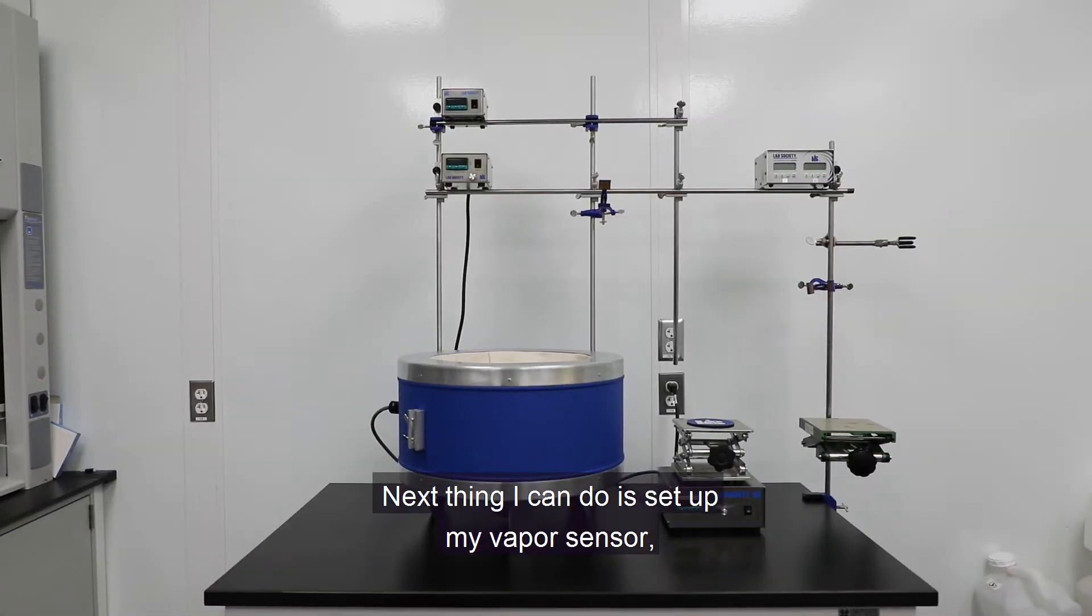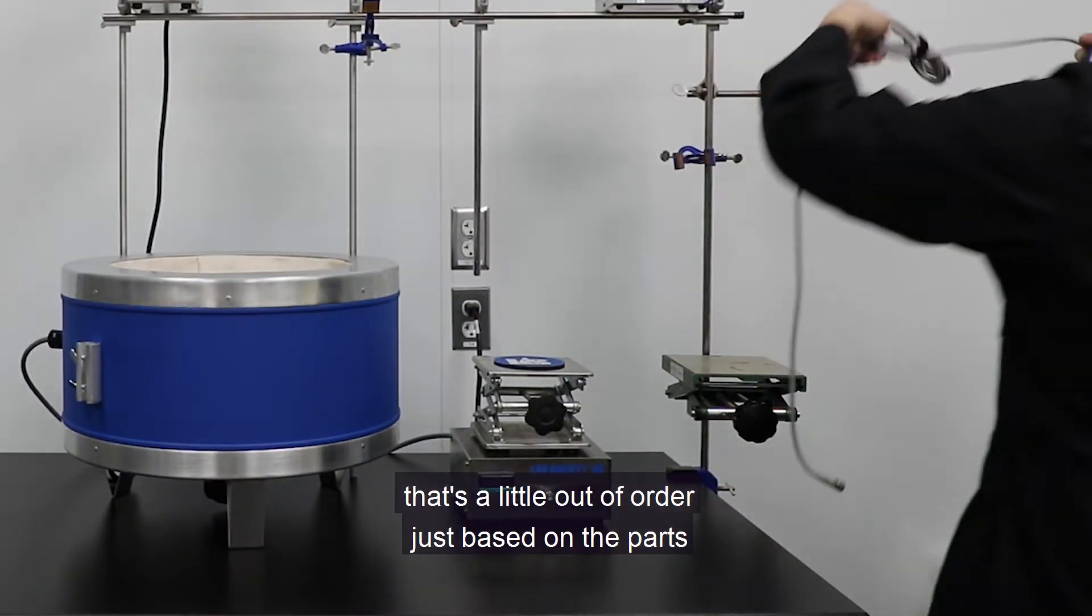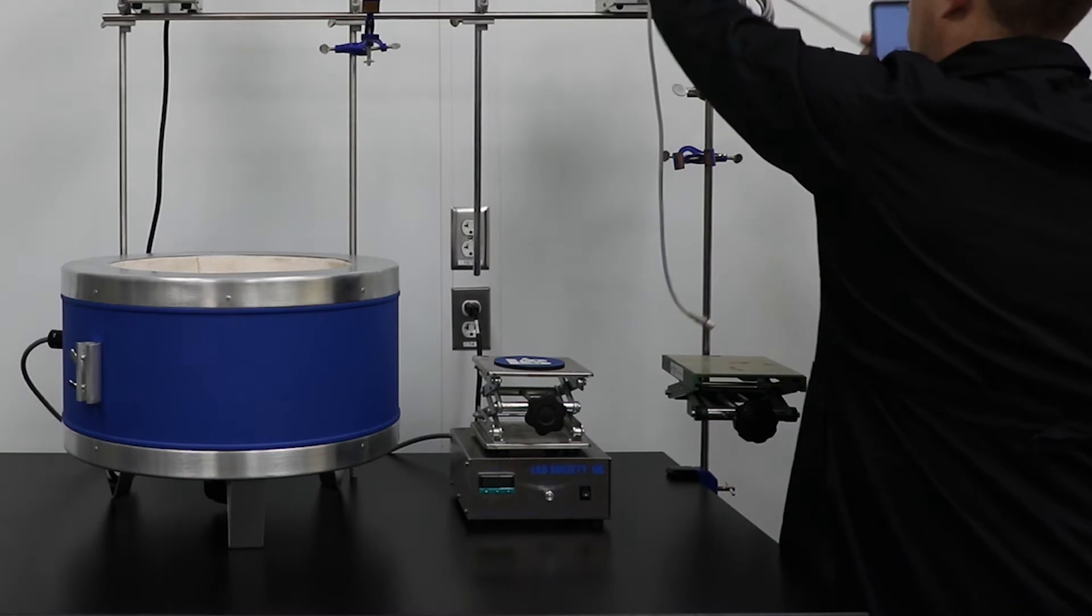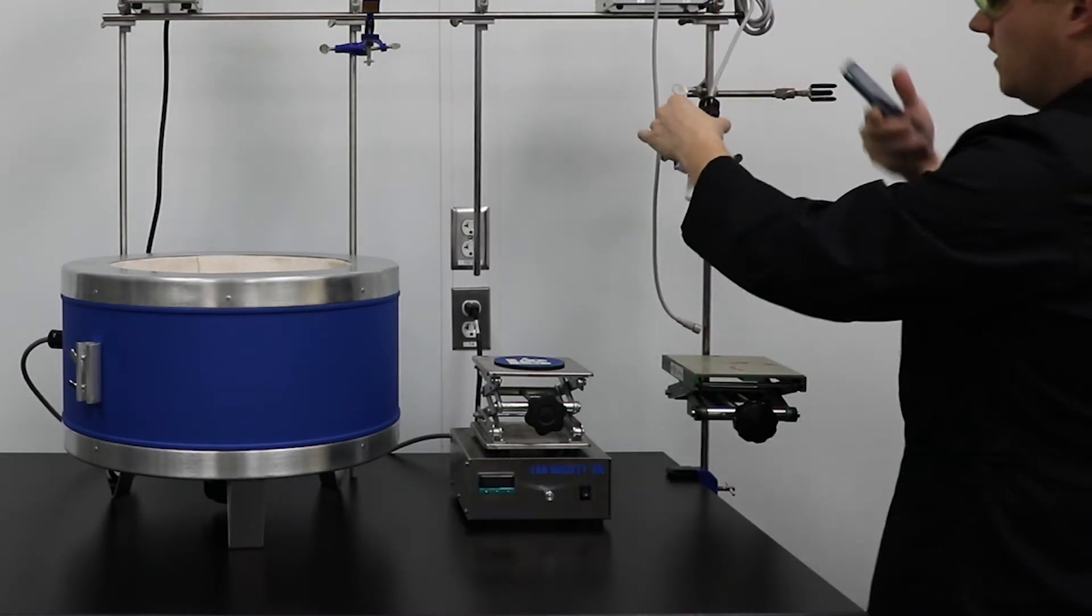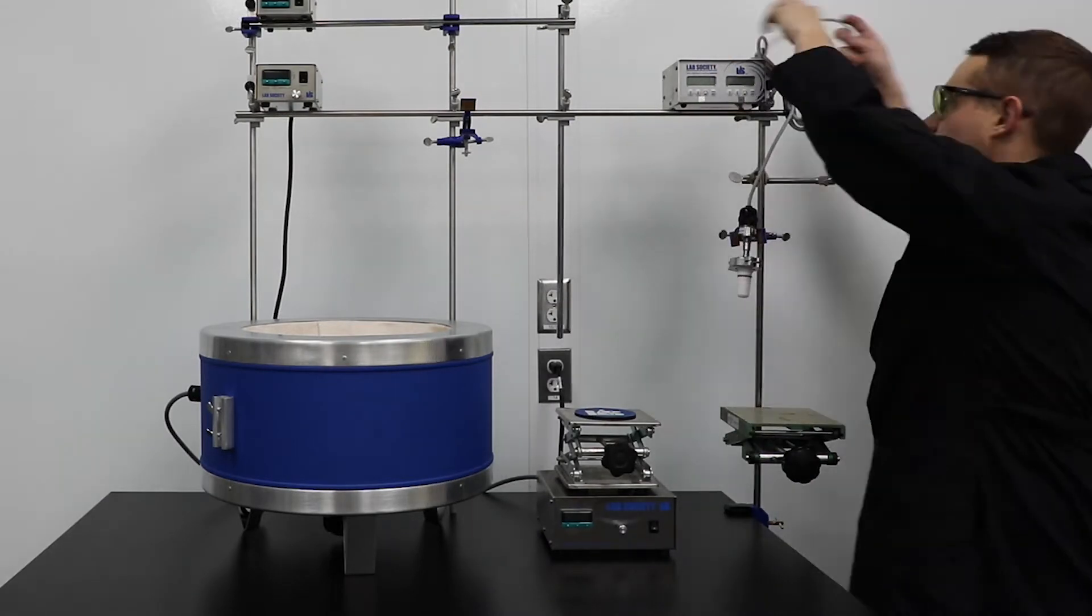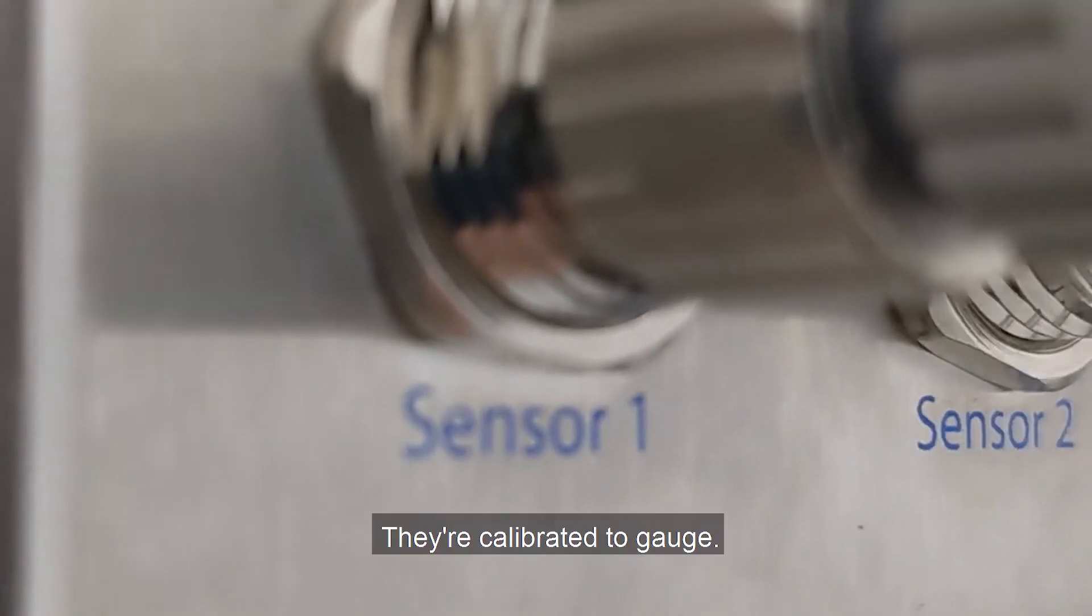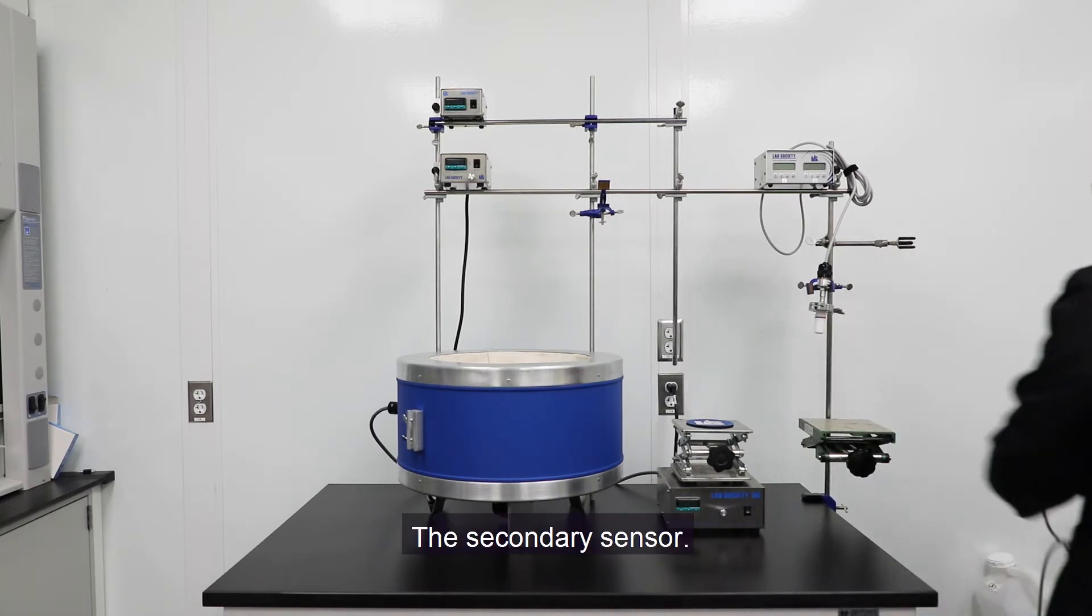Next thing I can do is set up my vapor sensor. I think it's a little out of order just based on the parts of the gravity. We'll go ahead and just set that there. And then I leave my vapor connector right here. So it's very important to have sensor one connected to sensor one on this controller. They're calibrated to the gauge. Secondary sensor.